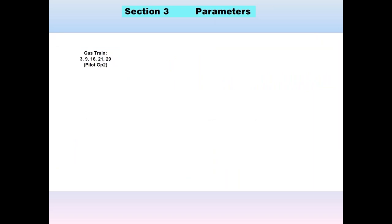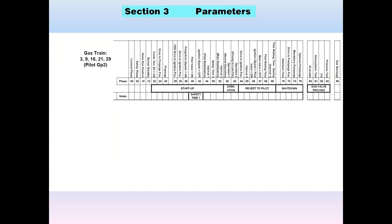At the end of the parameter section, we go to the sequence charts. We're going to pick gas train number three — pilot GP2 — the most common gas train. Gas trains 9, 16, 21, and 29 are quite similar with minor differences described in the book.